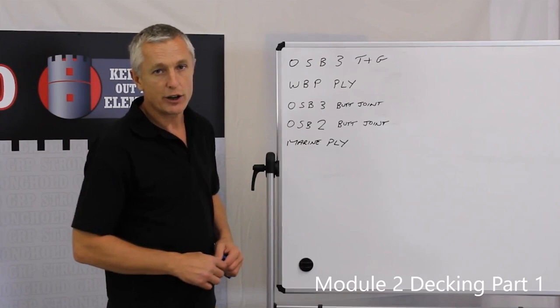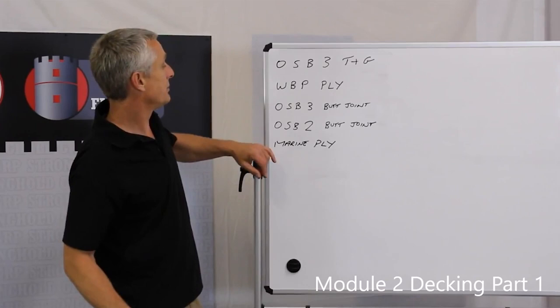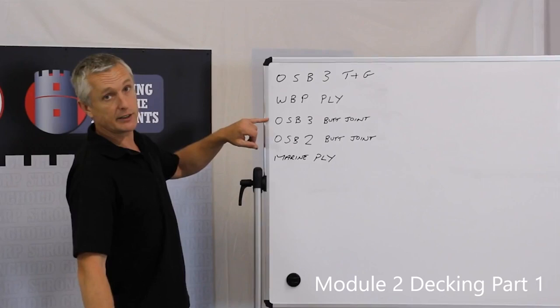For this video we're going to discuss decking products. We'll go through briefly the ones you shouldn't use with fiberglass and the ones that are ideal for using with fiberglass. I've written a list on this board of the five commonly available products. We've got marine ply, OSB2 butt jointed, OSB3 butt jointed, WBP ply, and OSB3 TNG.